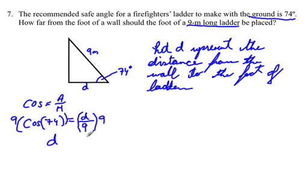So D then, and the 9's are going to cancel out, D is equal to 9 times cosine of 74 degrees.